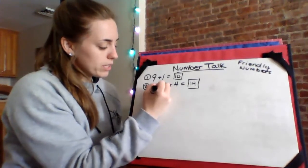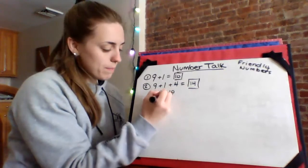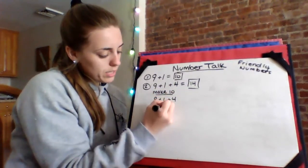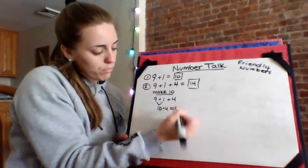How did we get fourteen? Did you make a ten? That's probably the easiest way. Nine, one, four. Put nine and one together, just like we know from our previous one. And four more is fourteen.